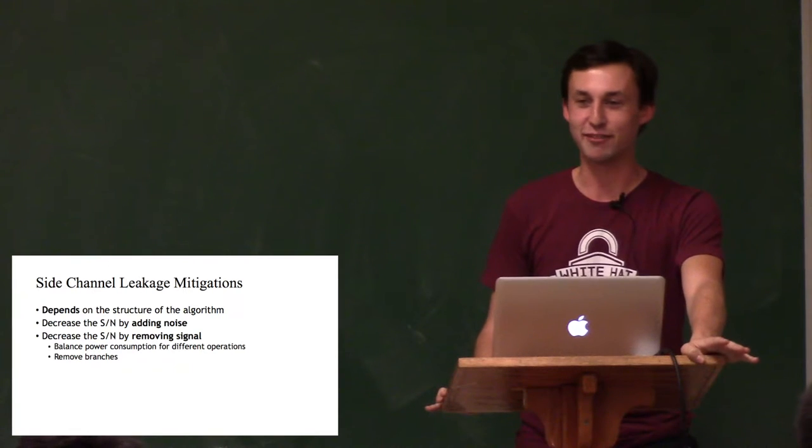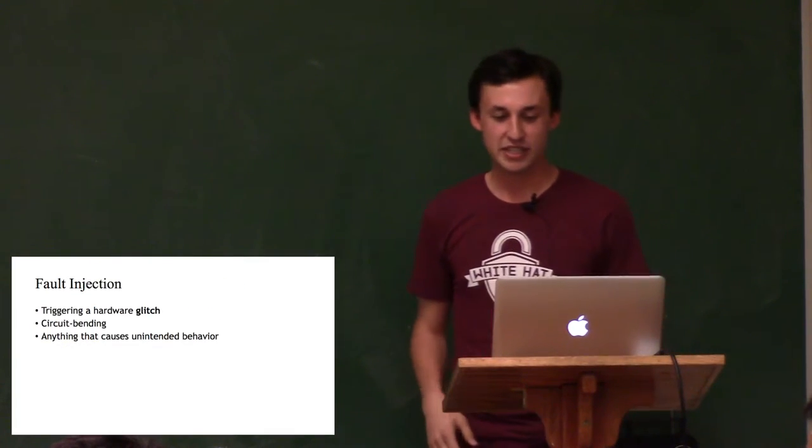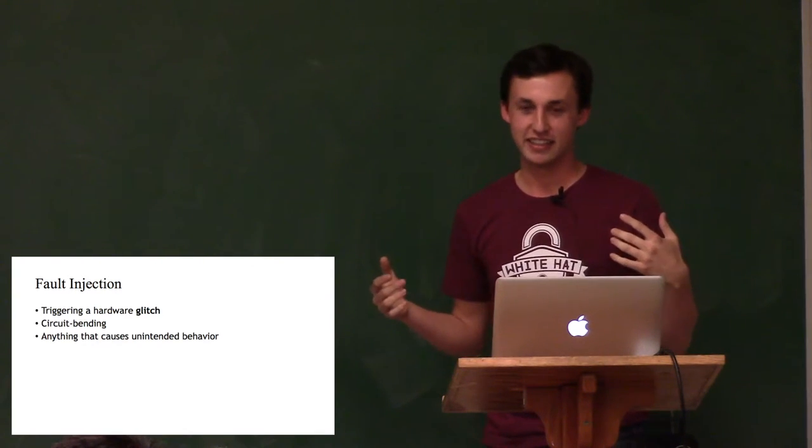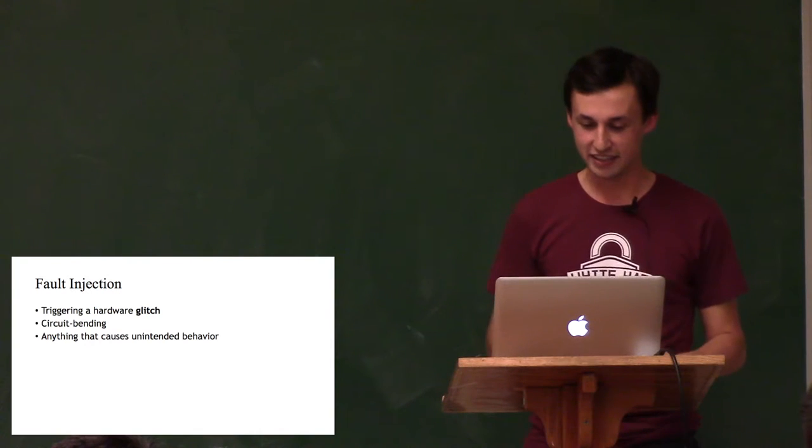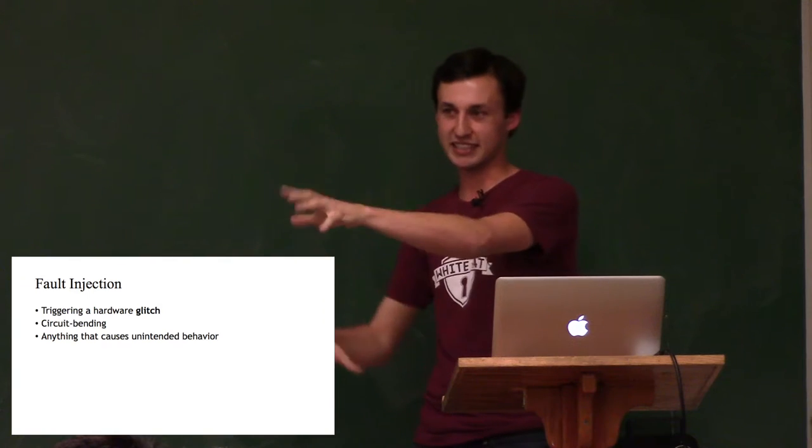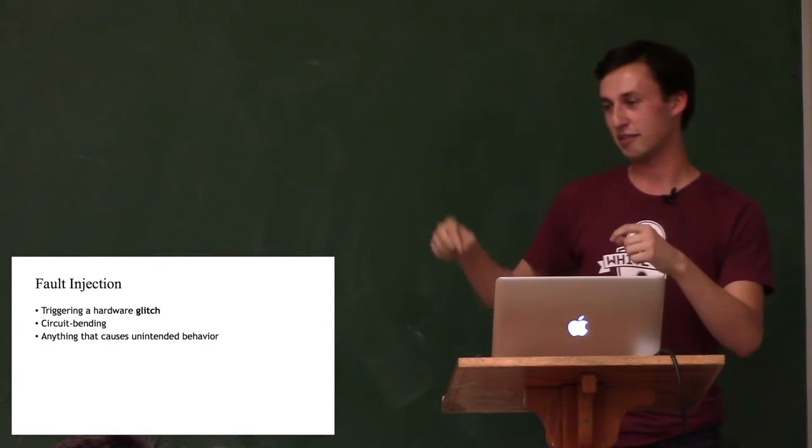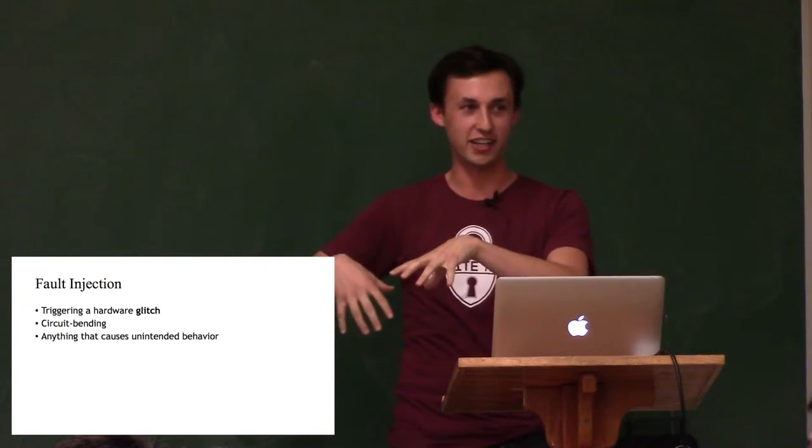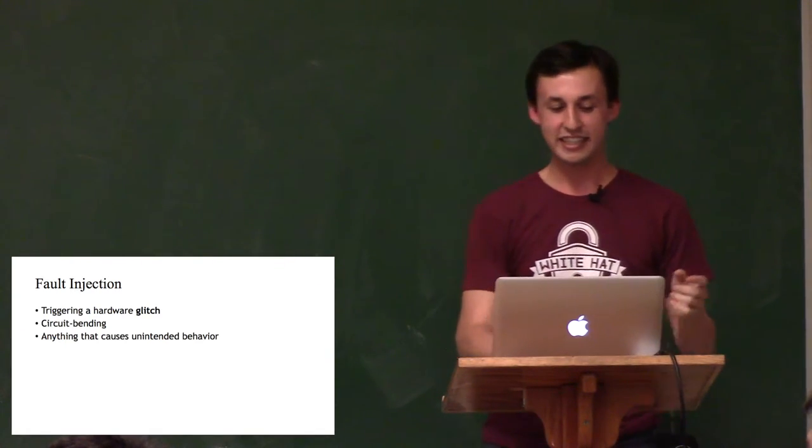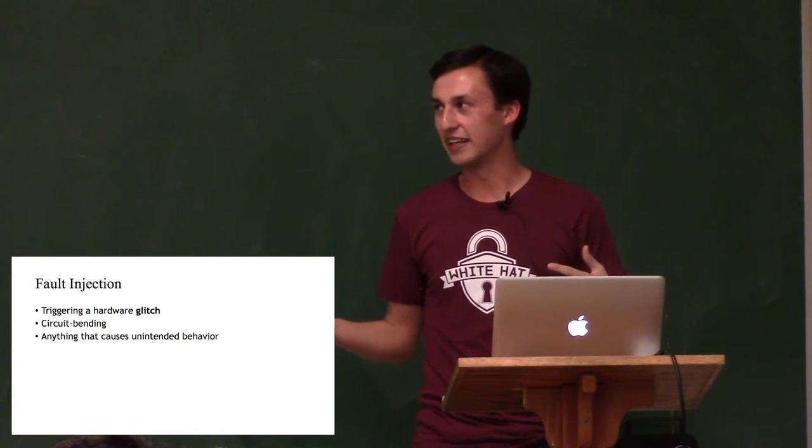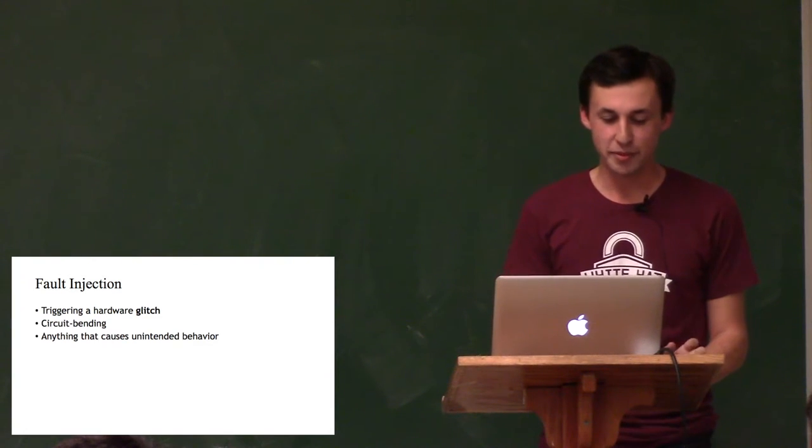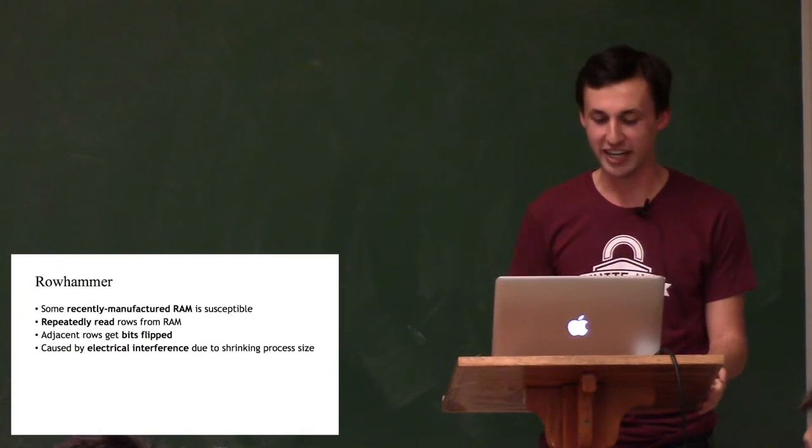Moving on to the other kind of hardware vulnerability, fault injection, which is just a fancy way of saying triggering a hardware glitch, making the hardware do something that it wasn't supposed to when you built it. And this can be done by circuit bending, by connecting conductors in places that weren't supposed to be there, adding voltages that weren't supposed to be there, adding high-frequency signals and making it switch faster than it's supposed to. Basically, anything that causes the circuit to do something that wasn't intended by the designer.